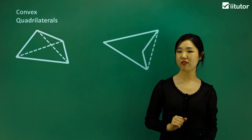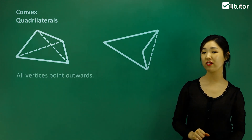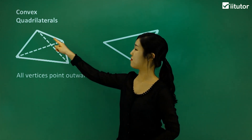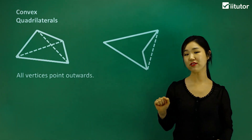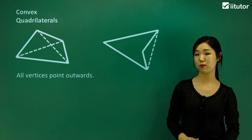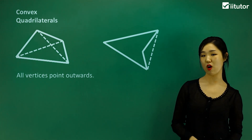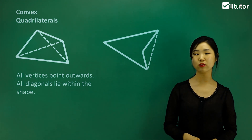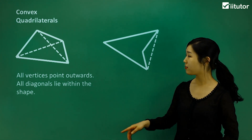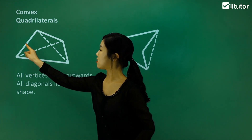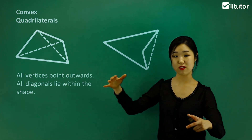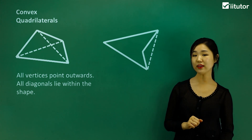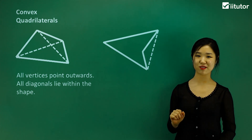The reason why this is a convex quadrilateral is because, firstly, all vertices point outwards. See how all the vertices are going in an outwards direction? That's one key property of a convex quadrilateral. Another one is that all diagonals lie within the shape. If I draw a diagonal across there and across there, they're all inside the shape.